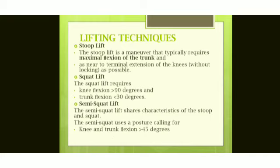The stoop lift is a maneuver that typically requires maximal flexion of the trunk, and the knee will be in extension or near-normal extension — the knee is not very prominent but the trunk is at maximum flexion. The squat lift requires knee flexion to 90 degrees and trunk flexion less than 30 degrees. The trunk flexion is in a better fundamental position, making it a safer basic lifting technique since the trunk is less flexed and pressure is better distributed.